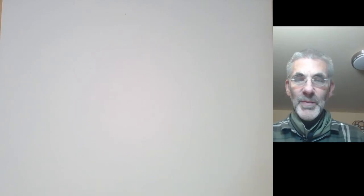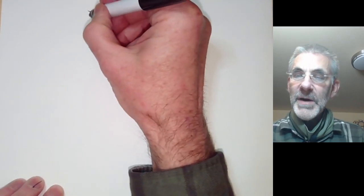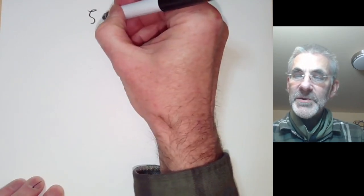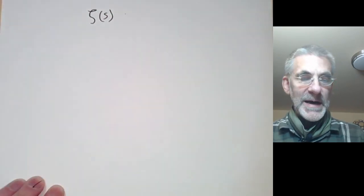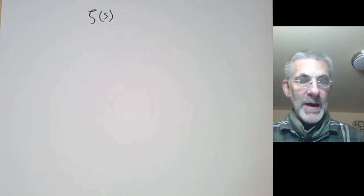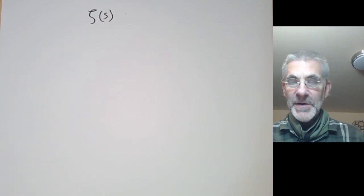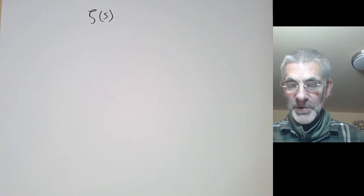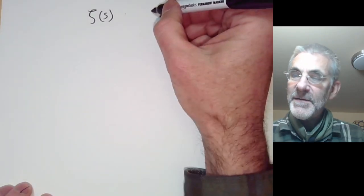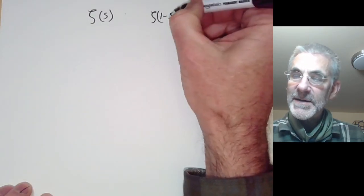This lecture is part of an online undergraduate course on complex analysis and will be about the functional equation of the Riemann zeta function. We are going to show how to use the residue theorem to relate zeta of s to zeta of 1 minus s.